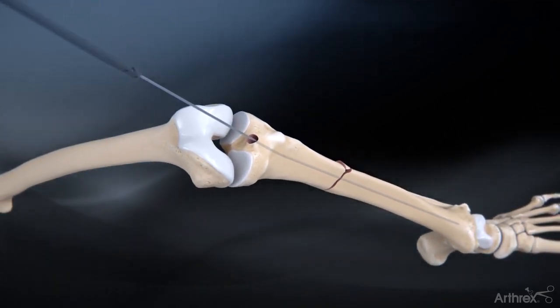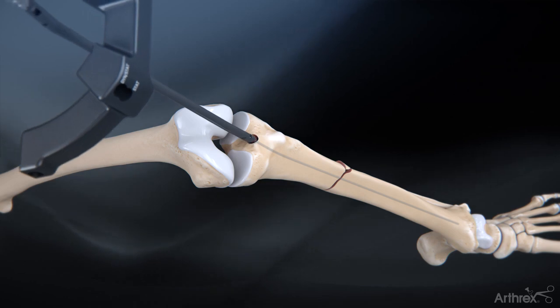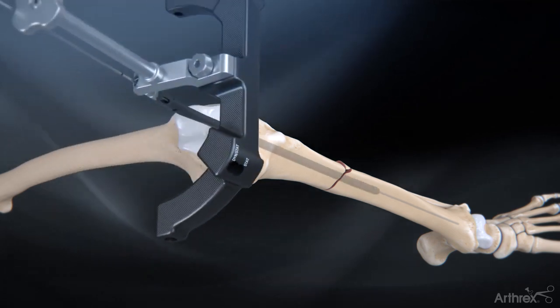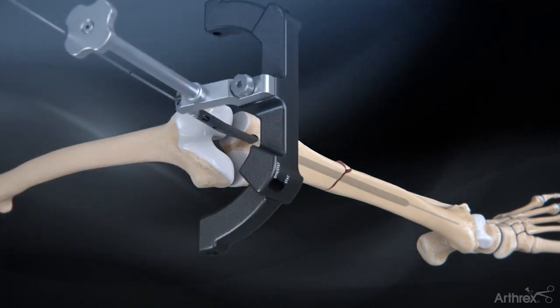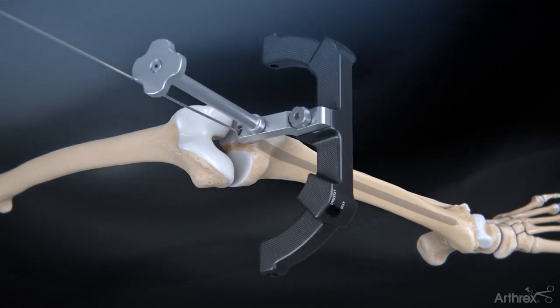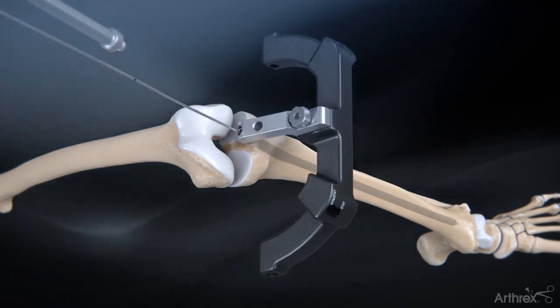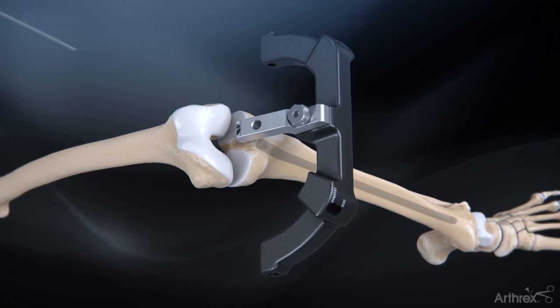Remove the entry tube and insert the nail over the ball nose guide wire and into the canal. Lightly strike the impactor pad with a mallet to complete the nail insertion. Remove the ball nose guide wire.